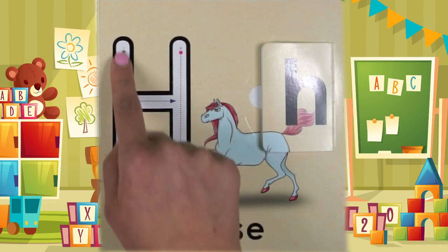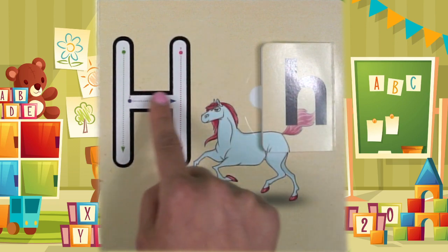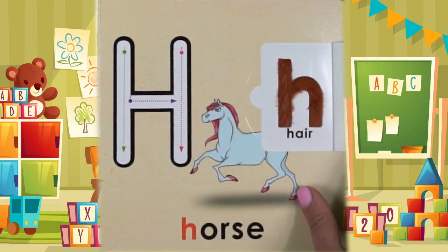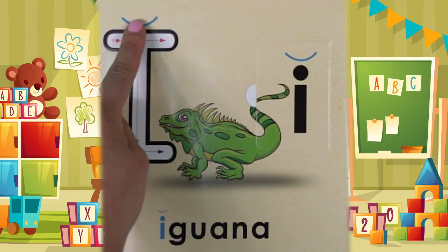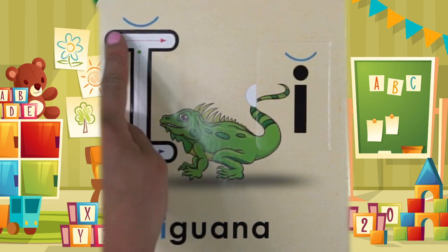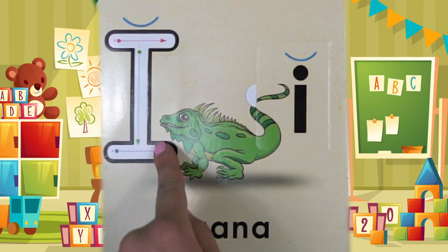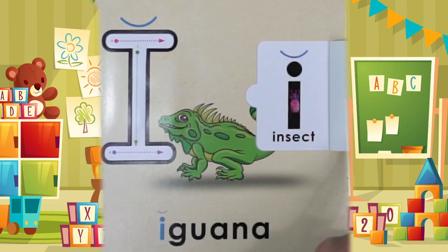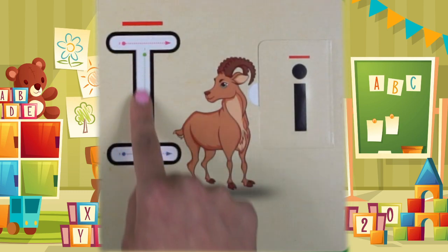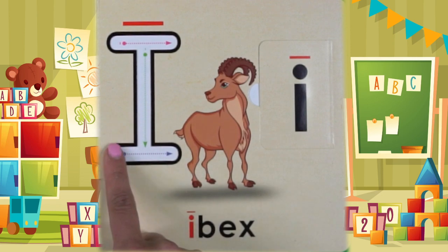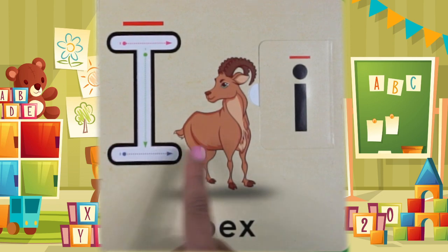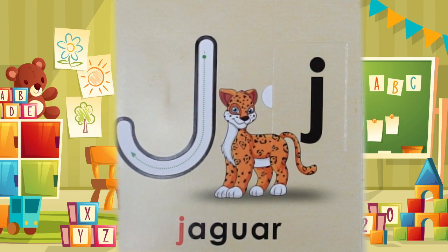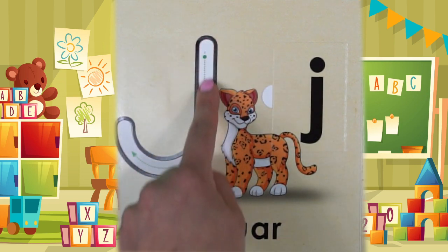Its name is H, its sound is H. Hat starts with H and hair starts with H. Its name is I, its sound is I. Iguana starts with I and insect starts with I. Its name is I, its other sound is I. Ibex starts with I and ice cream starts with I.